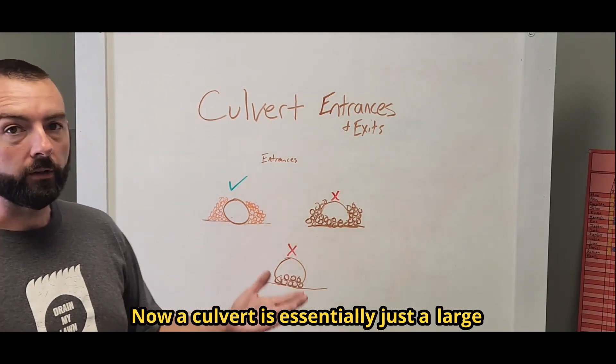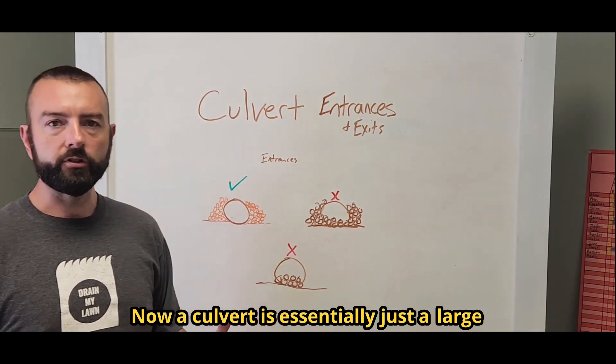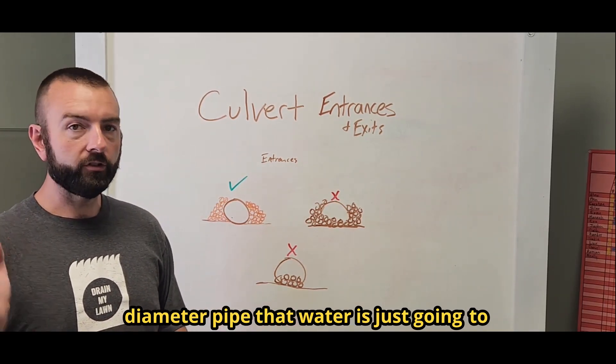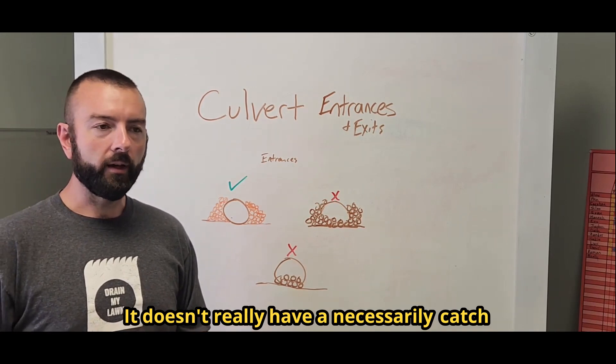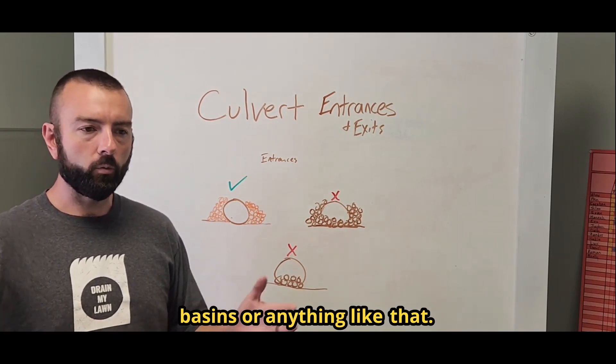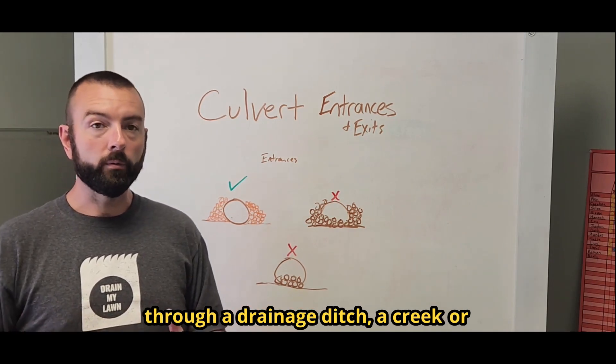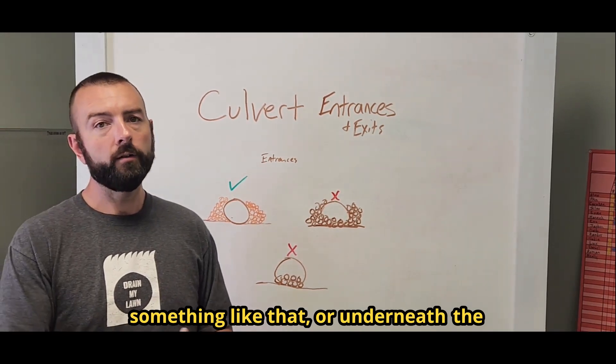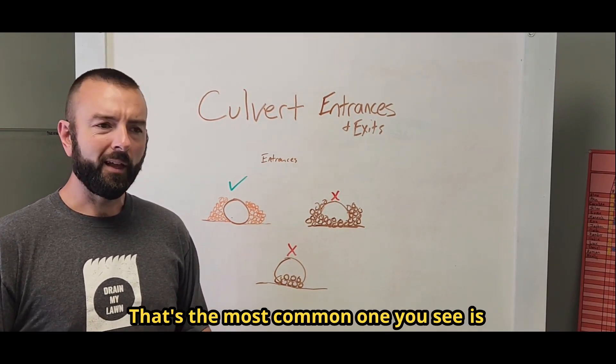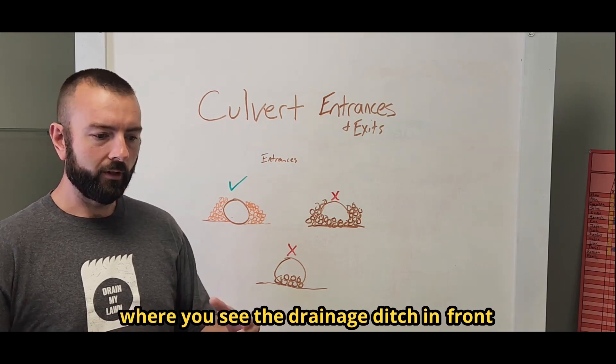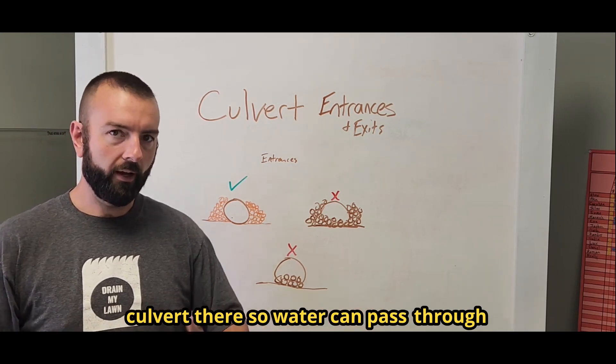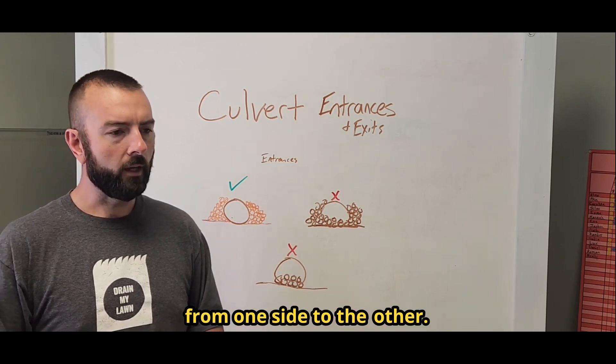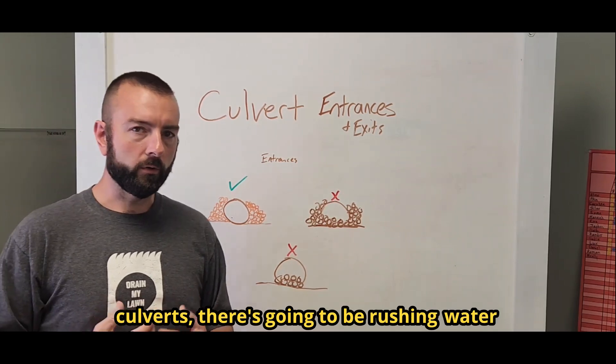Now a culvert is essentially just a large diameter pipe that water flows through. It doesn't really have catch basins or anything like that, just water can flow through either through a drainage ditch, a creek, something like that, or underneath a driveway so that water can pass through. The most common one you see is the drainage ditch in front of a house where they put a culvert there so water can pass from one side to the other.